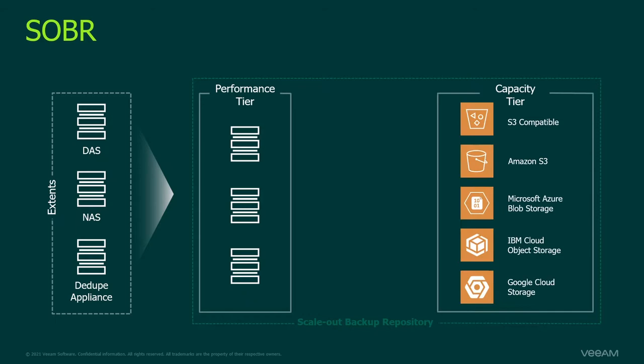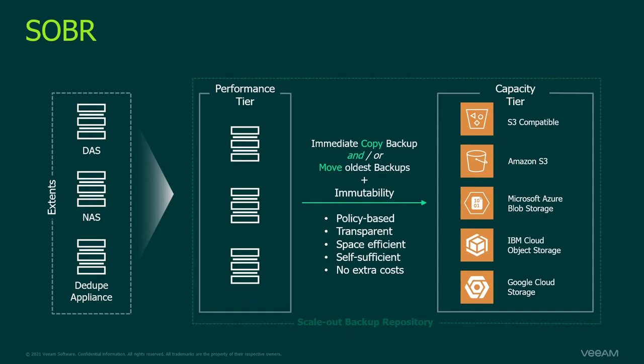Later on we just add the capacity tier — our object storage connection. We can add S3 compatible object storage, Amazon S3 native, Microsoft Azure Blob, IBM Cloud Object Storage, and Google Cloud Object Storage. We can then do a copy or a move of backup data to the capacity tier.